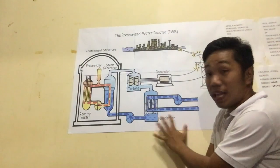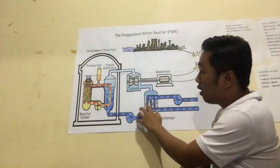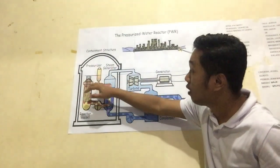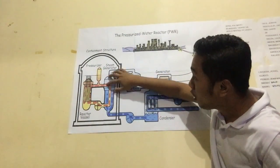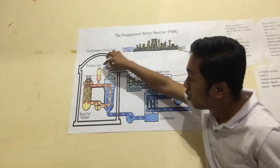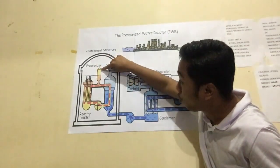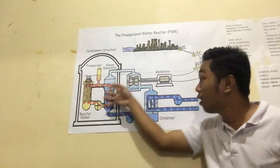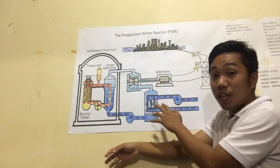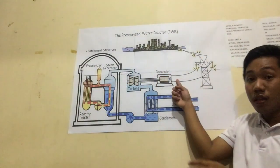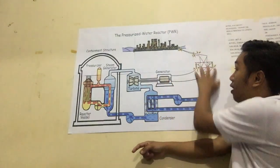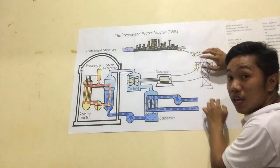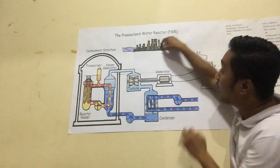This is the water and the condenser. Then the reactor vessel. Then the steam generator. And also this is the pressurizer. Then the turbine. After all of this process, it will generate electricity, which will be distributed to the city.